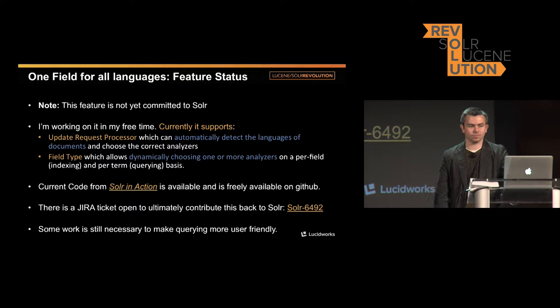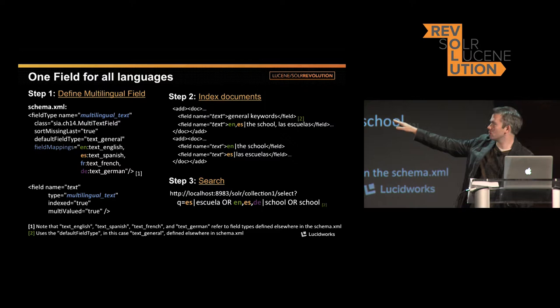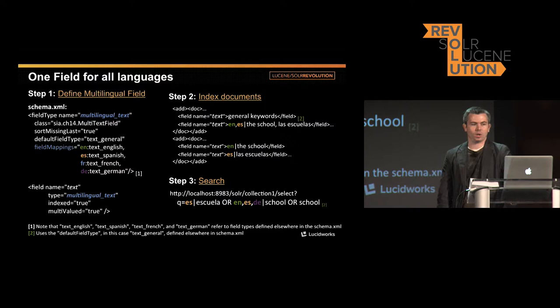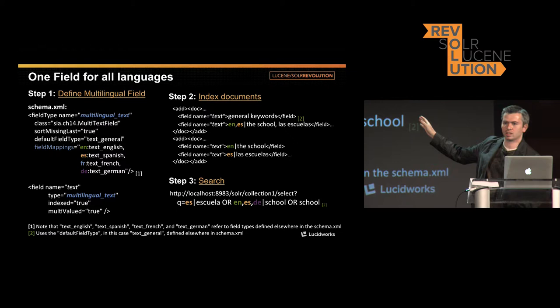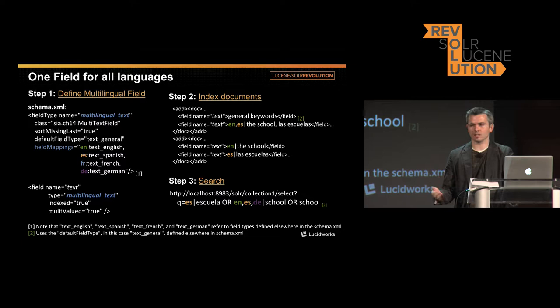You could extend this beyond language — for example, indexing bigrams, trigrams, and quadgrams and then at query time choosing which n-gram size to search on. To set this up in Solr in Action, you define a field type called 'multilingual_text' with mappings: prefix 'en' maps to text_english, 'es' to text_spanish, 'fr' to text_french, 'de' to text_german. You pass in documents specifying which languages to process, and send the same language prefixes with your search queries. It's very flexible — you can search with no analyzer if needed and still match on stemmed exact tokens.